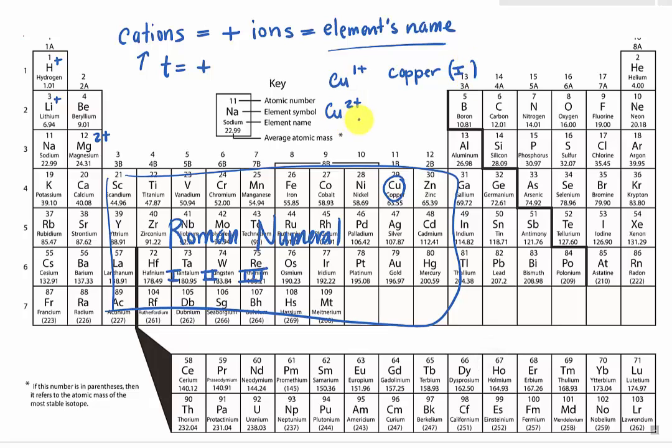And then for copper 2, of course, we start with the name of the element. Because all the positive ions take the name of the element. Therefore, we have copper. But to indicate this copper is 2 plus, we will put the Roman numeral 2.